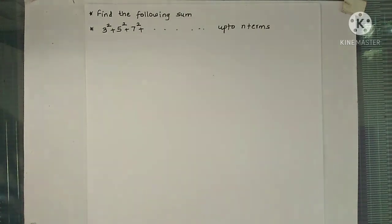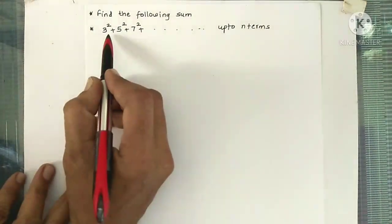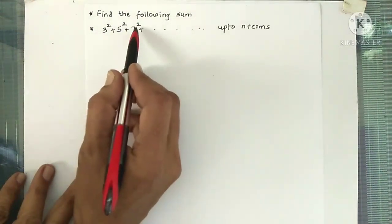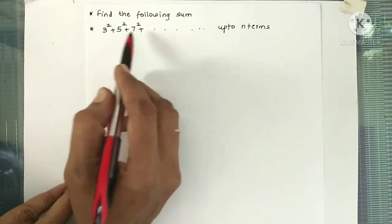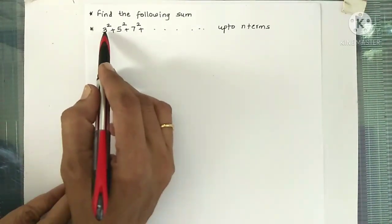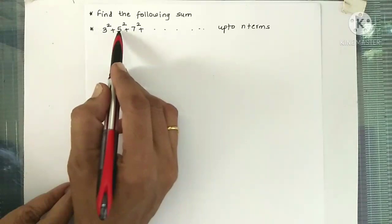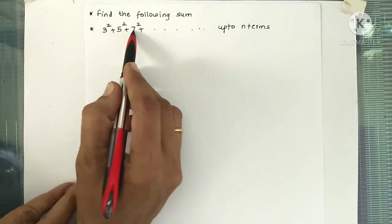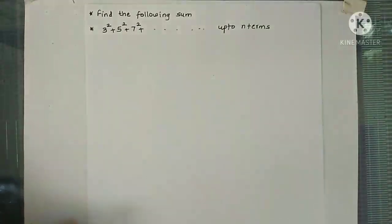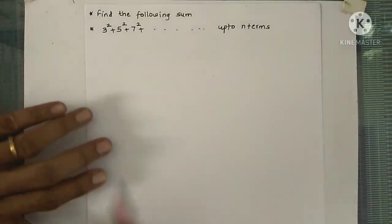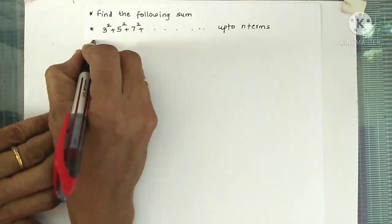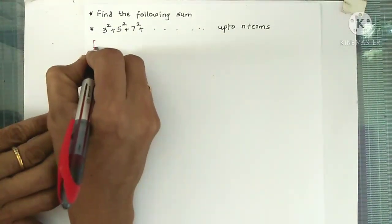You can see here that the terms are: first one is 3 square, then 5 square, then 7 square. The next one will be 9 square because we are adding 2 to get the next term — 5 plus 2 is 7, so next will be 7 plus 2, that is 9 square, then 11 square, like that.